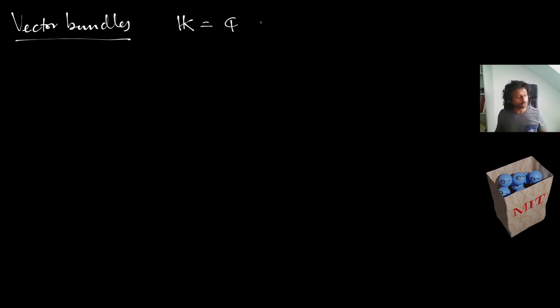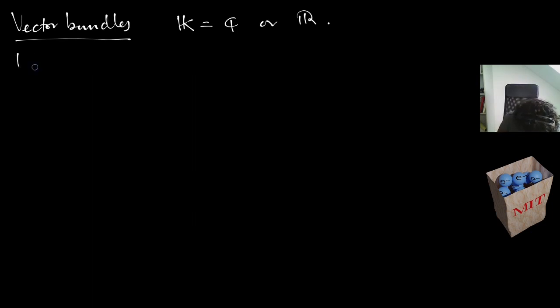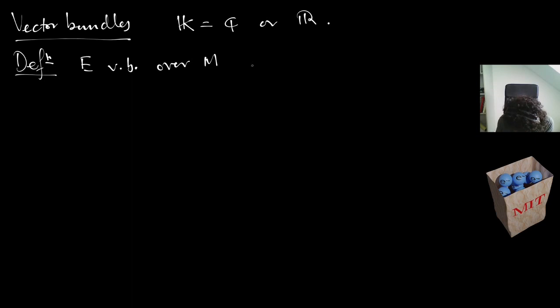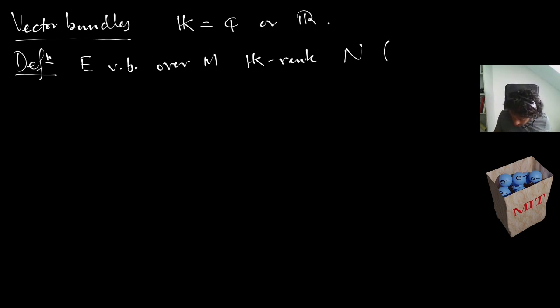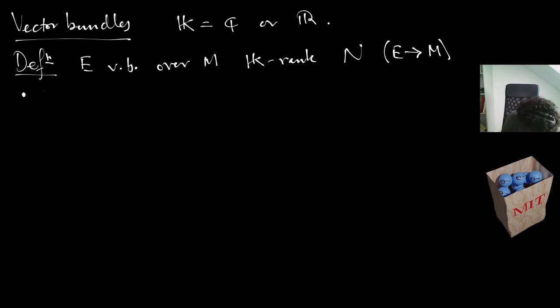I'm going to set my field to be either the complex numbers or the real numbers; by bold K I'll denote the field we're working with. So: definition. We want E to be a vector bundle over M — a manifold with boundary — of K-rank N. The first thing is that E is a topological space, and there is a continuous surjection π.